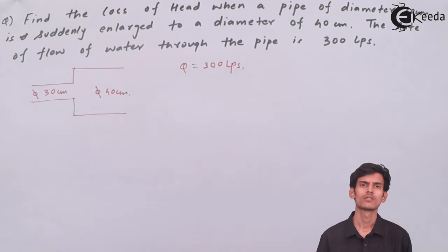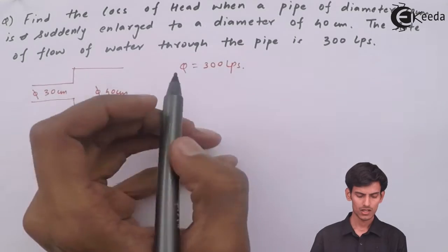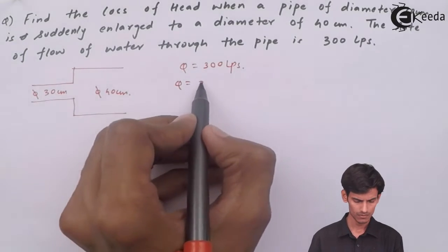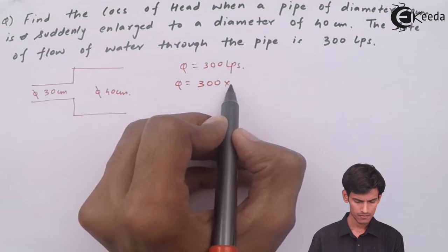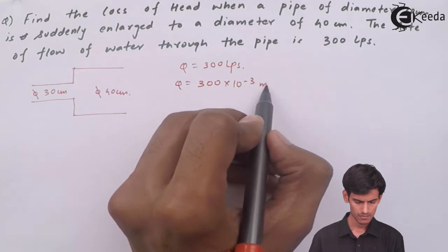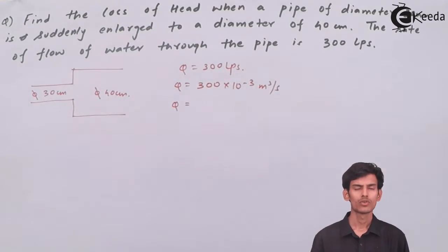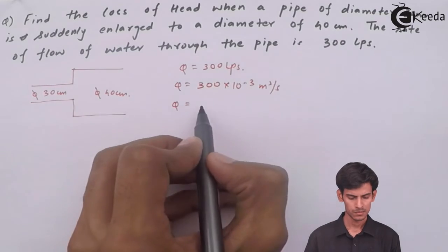300 liters per second is not an SI unit. You should know the value of Q in meter cube per second, so let's convert it. The value of Q will be 0.3 meter cube per second.